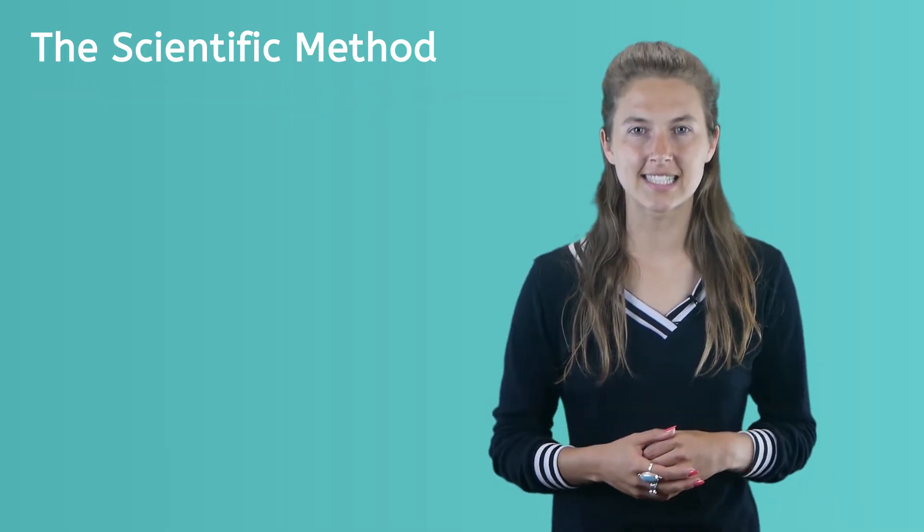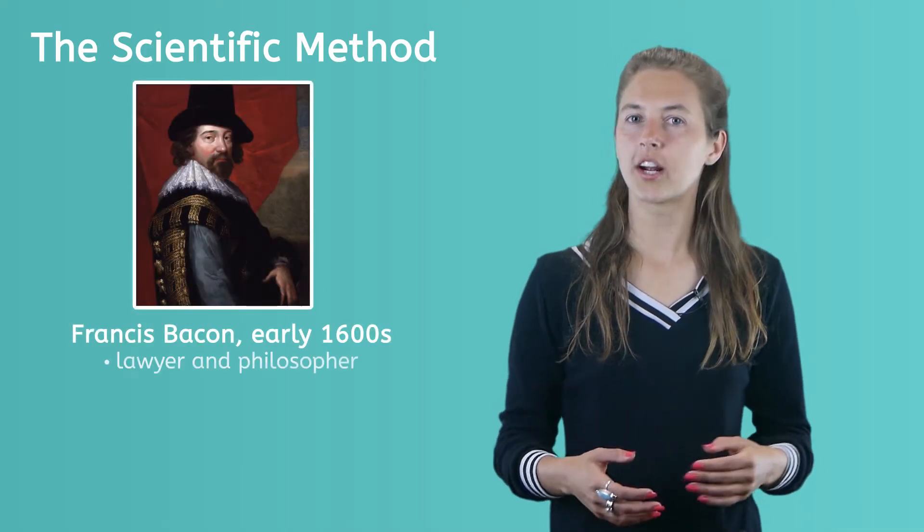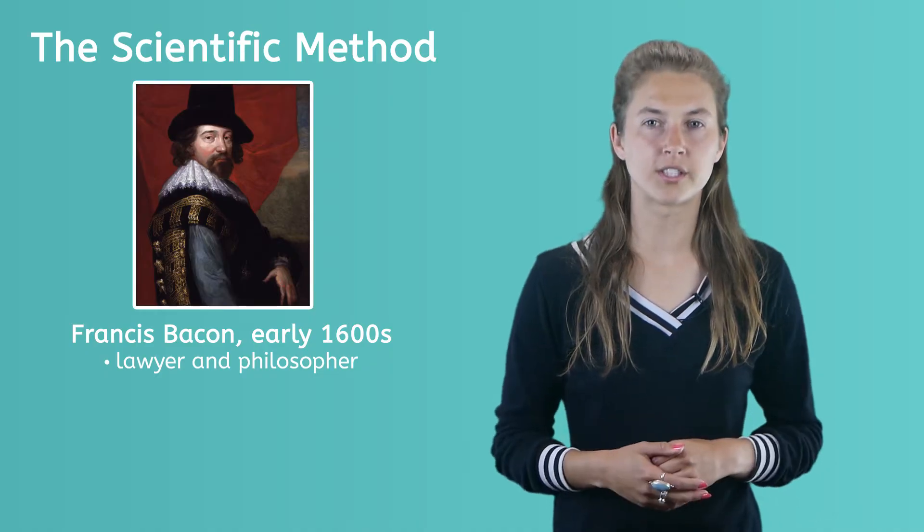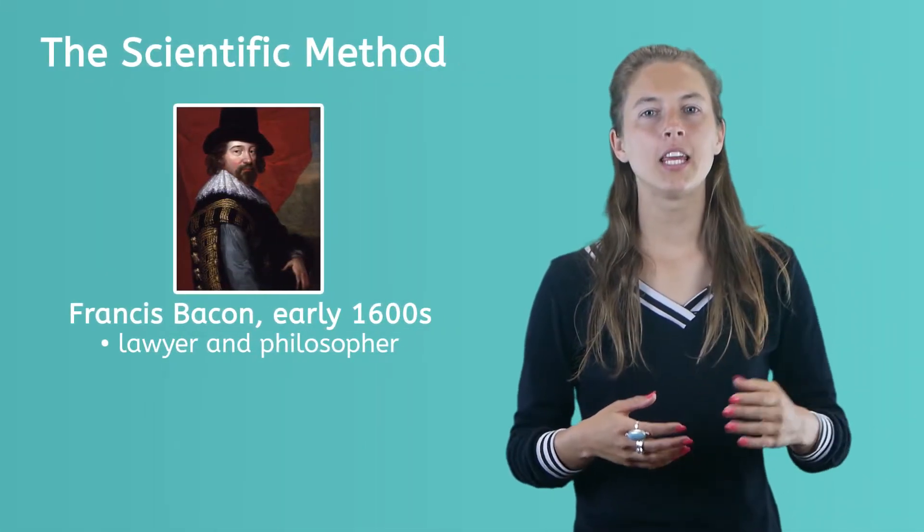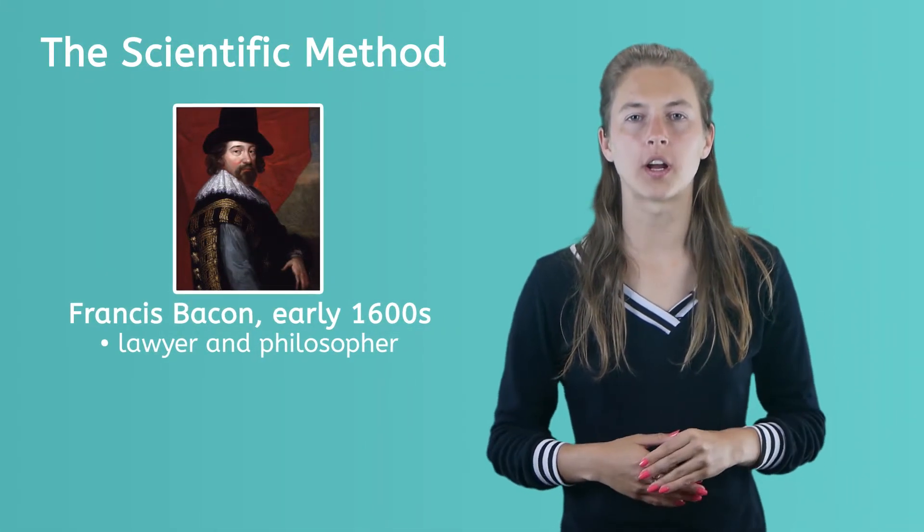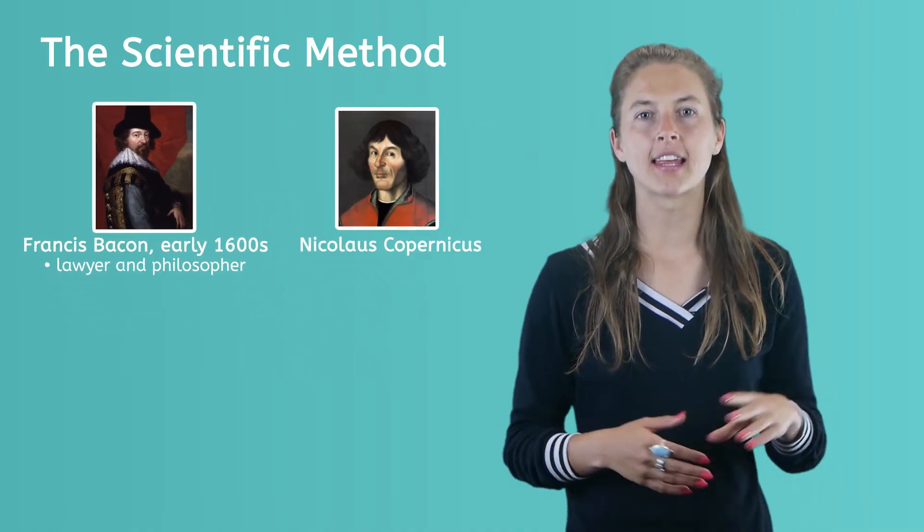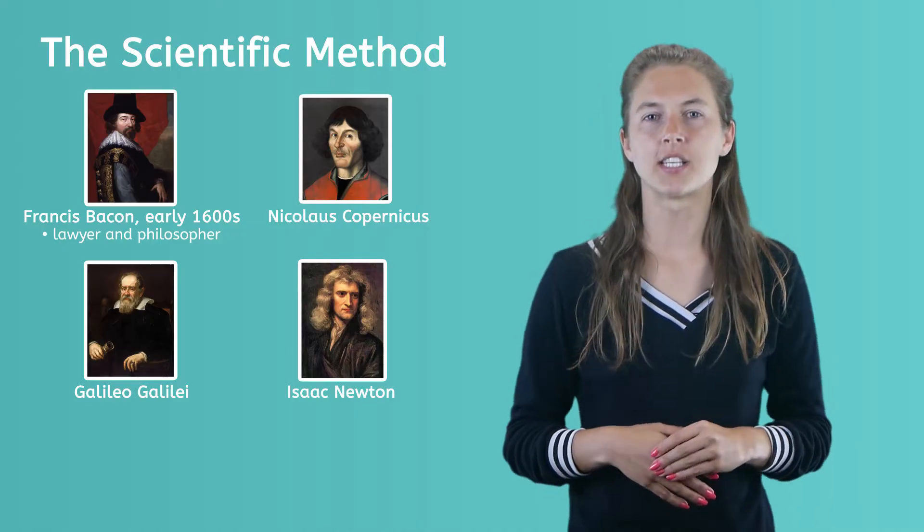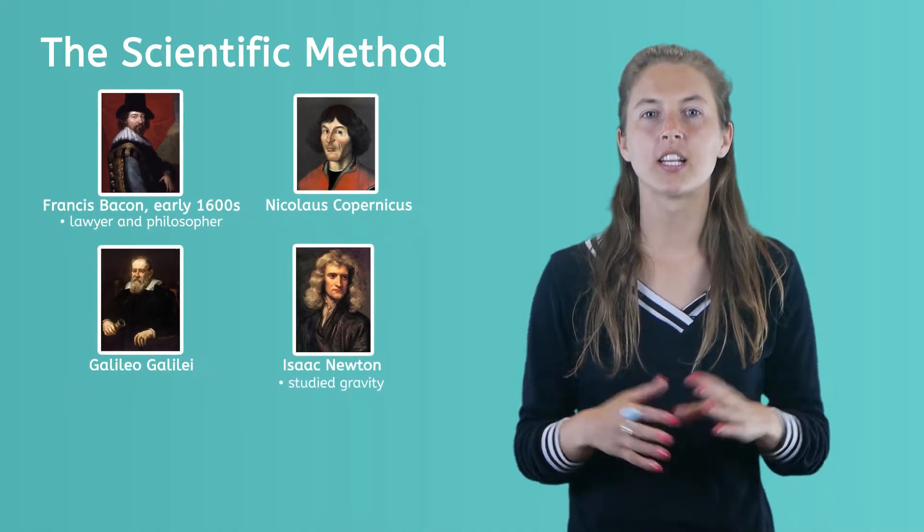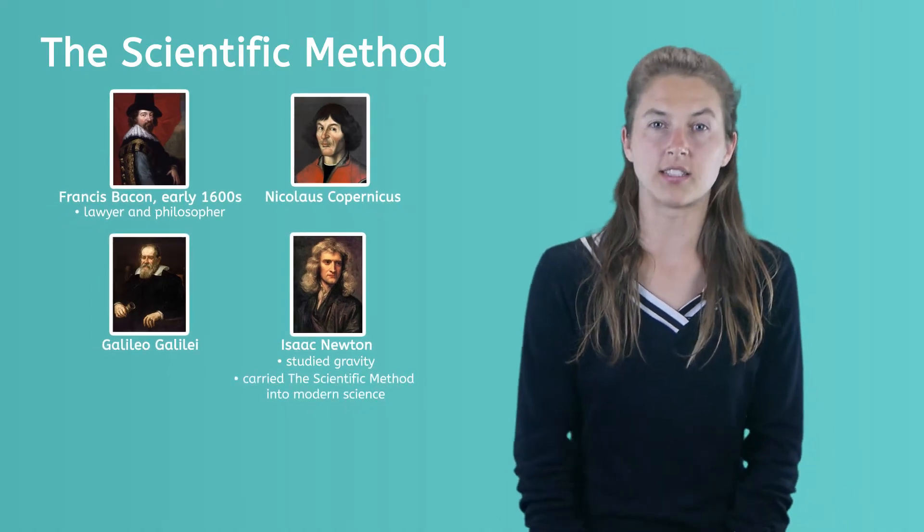In the early 1600s, Francis Bacon, a lawyer and philosopher, first proposed a structured method known as a scientific method. He was influenced by the scientific work of Nicholas Copernicus and Galileo Galilei. Isaac Newton, a popular scientist known for his study of gravity, did a lot to carry this method into modern science.